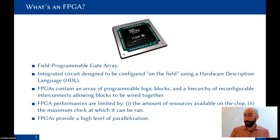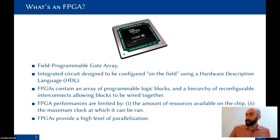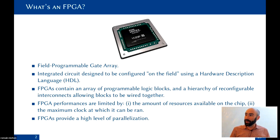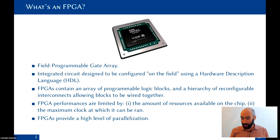FPGAs provide a high level of parallelization. Because you create your own processor, you can create it with as many cores as you want — they'll be small, but you have total control over the architecture. If you want a processor with a thousand cores, you can potentially do it.